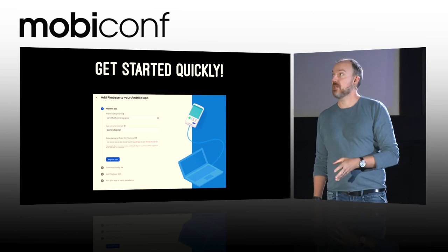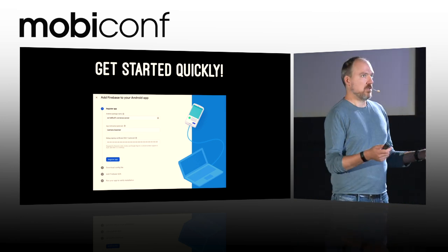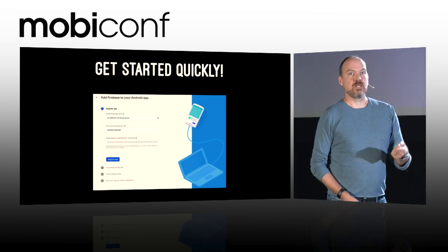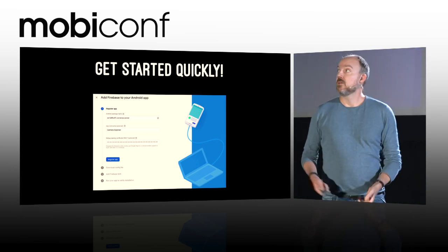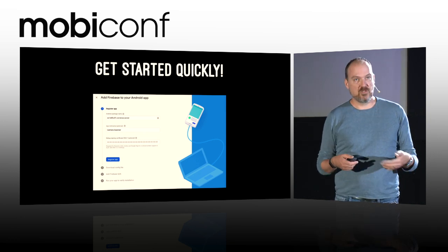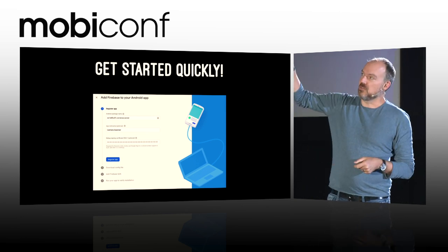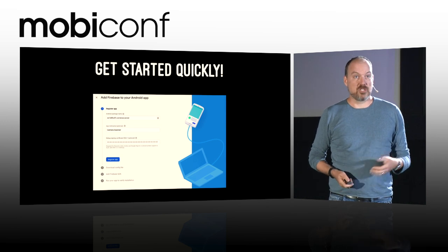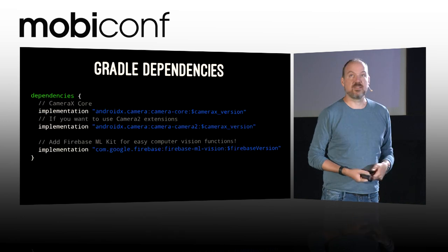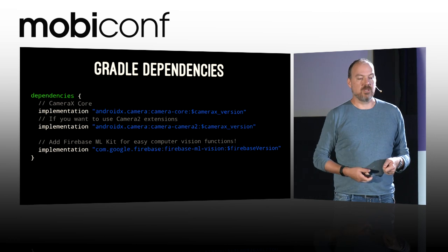For those of you who have to run out in five minutes, here's the quick and easy startup. You start by setting up a Firebase project, because we're going to use ML Kit, which is part of Firebase. It's super simple — you get a dialog, fill in the package name, register everything, get the JSON file you include in your project, and you're done. That's the Firebase setup. Then you add the dependencies: the CameraX dependencies and Firebase ML Vision.